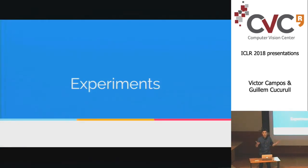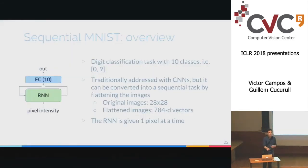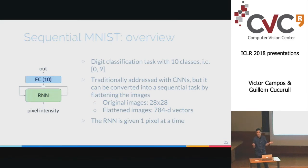Now let's go to the experiments. I'll show two today, though we have more in the paper. First is MNIST. Normally addressed with CNNs, classifying digits 0-9 from black and white images. As is common in RNN papers, we flatten the images into vectors of almost 800 pixels, feed them one by one to the RNN, and after seeing the whole image, classify with a fully connected layer and softmax. This is quite challenging because it has almost 800 inputs.